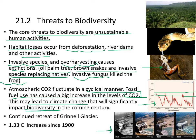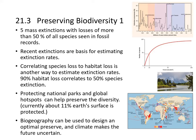Here's a retreating glacier: in 1938 the level was much higher, and now it's almost completely disappeared. There has been about a 1.33 degree increase in temperature since the 1900s. There have been five mass extinctions resulting in losses of more than 50% of all species visible in the fossil record. Recent extinctions are the basis for estimating current extinction rates, and correlating species loss to habitat loss is another way — 90% habitat loss corresponds to about 50% species loss.